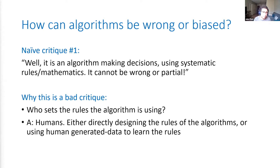One of the reasons this is a bad critique is: who's going to set the rules the algorithm is going to use? It's going to be humans in some way — either a human has designed the rules of the algorithm, or a human intervenes because the data we're using to train the algorithm is generated by humans. So you should expect human bias to come into those algorithms.